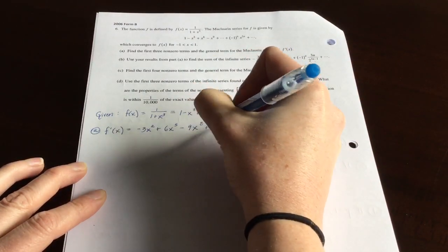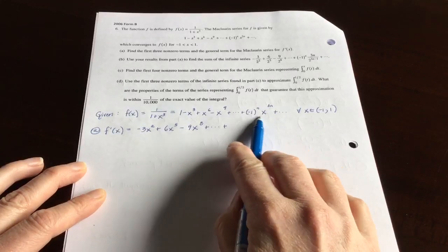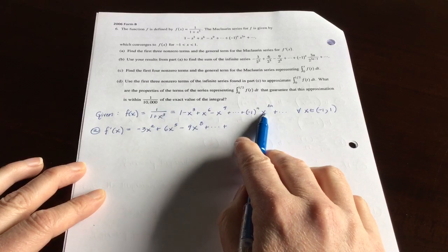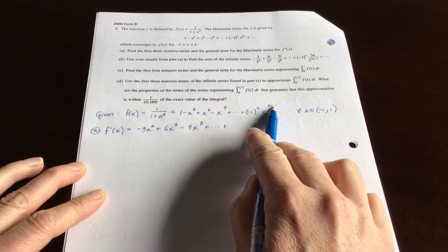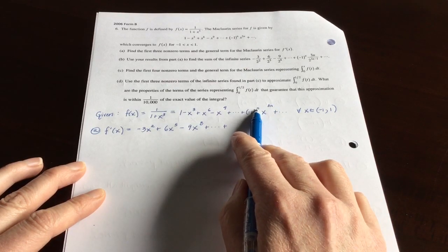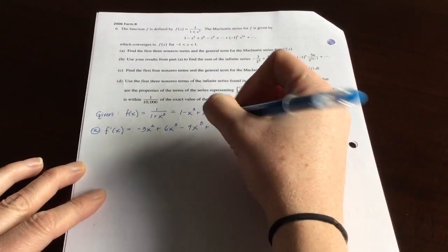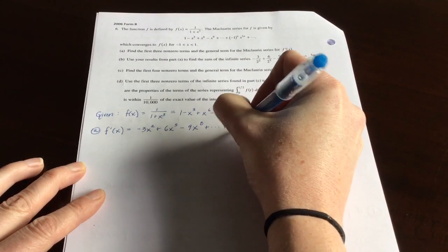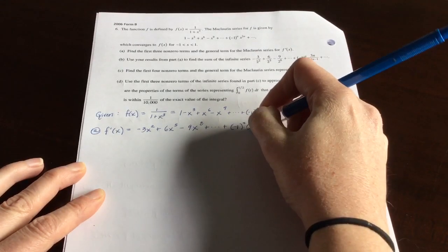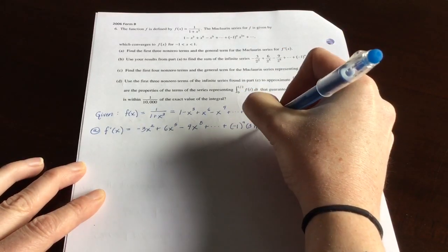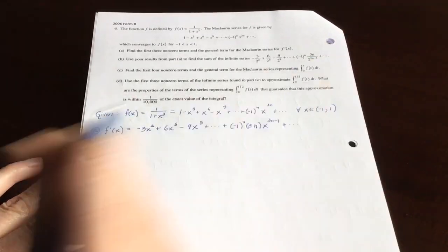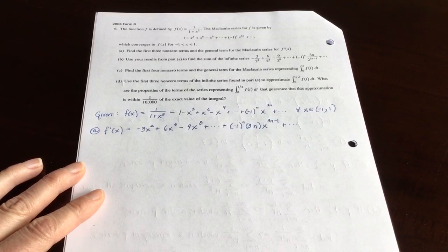And then they said to get the general term, and to do that I would just take d dx of this general term that they had given us. Remember you're taking the derivative with respect to x, so as far as that derivative is concerned, these n values are constants. So negative 1 to the n would be a constant multiple, and then you could just use power rule here on the right side. There we go, and then it would continue past the nth term. And that's all they asked for, for part A.